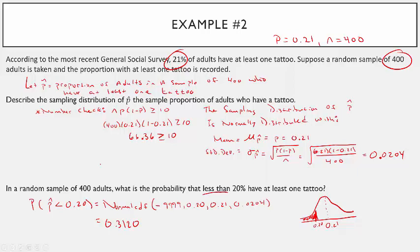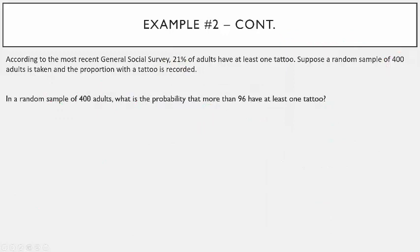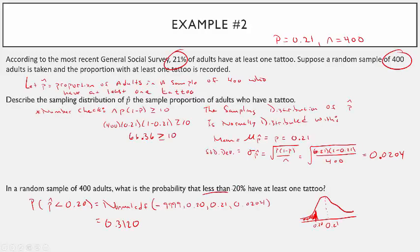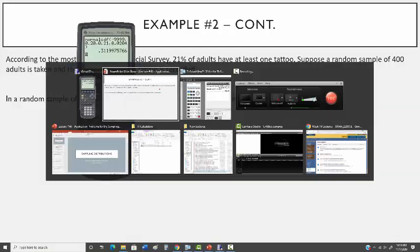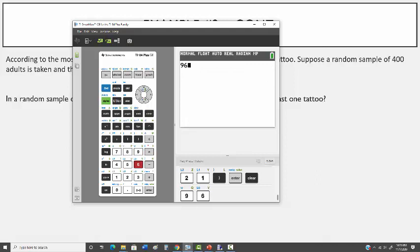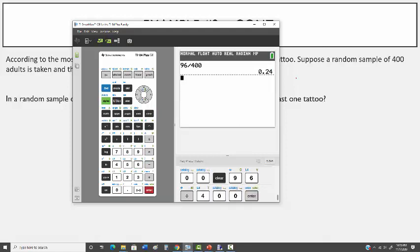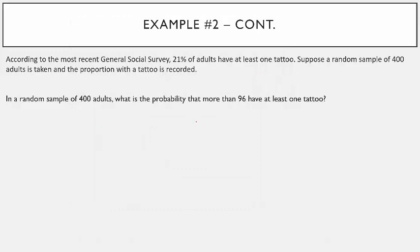One last problem: in a random sample of 400 adults, what is the probability that more than 96 have at least one tattoo? This seems different because no percentage is given, so you must convert 96 to a proportion: 96 out of 400 is 0.24, or 24%. So it's the probability that p-hat is greater than 0.24.